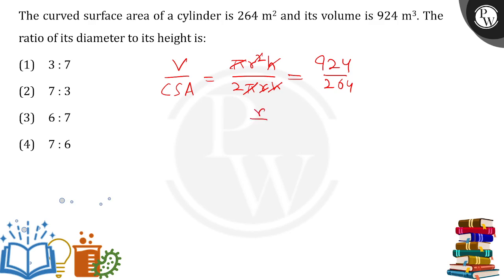We are left with r by 2. And this when you do the calculation will be coming out to be 7 by 2. So from here the value of r comes out to be 7 meter.